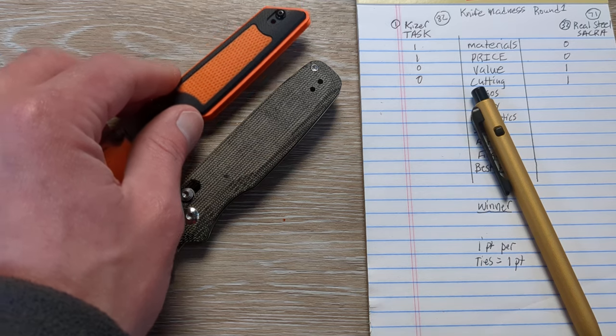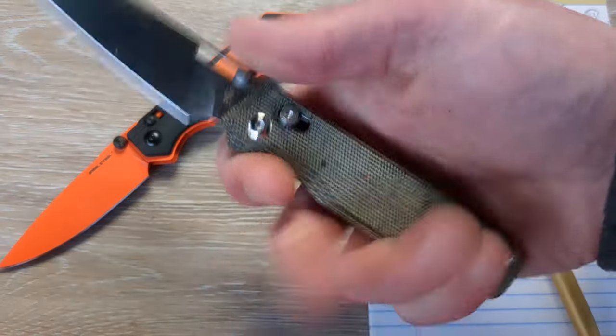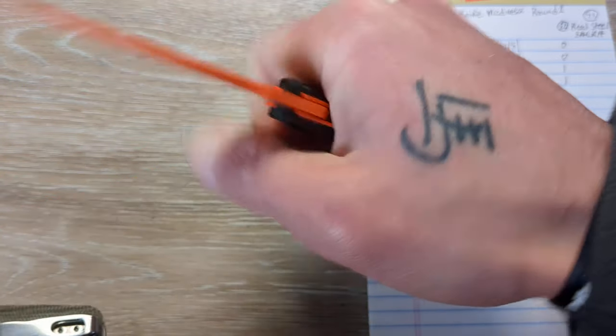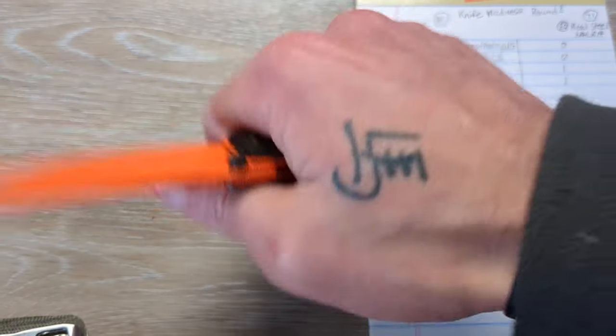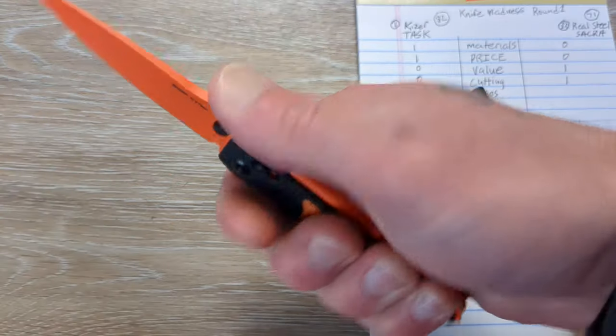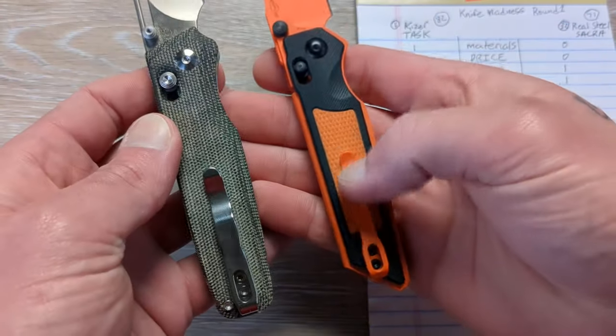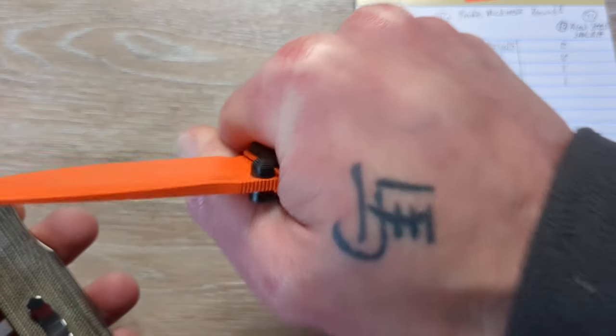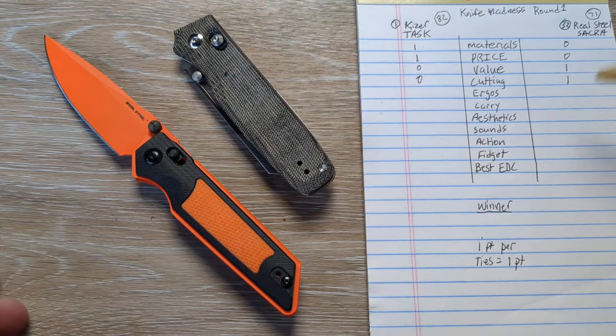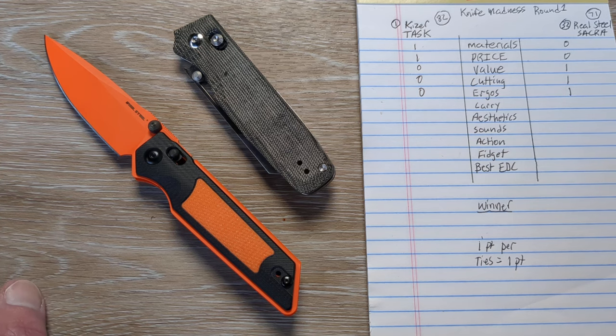Man, this is tough. The ergonomics will have to go. There's something to be said guys for this full length backspacer here. And the texturing that has been done on this knife and the jimping here on the spine. This is open construction. There's no jimping. I really am leaning towards the real steel as the more ergonomic one. It's got a more minimal pocket clip. I think I'm going to lean into the Sakra. So we have a 3-2 lead going into the carry category.